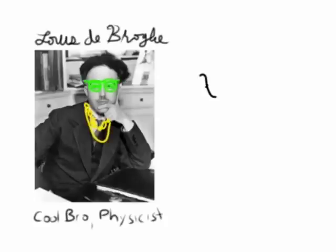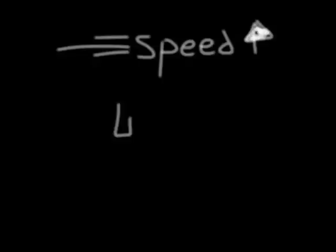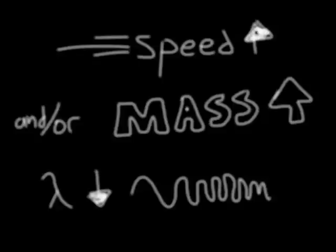A cool bro named de Broglie hypothesized a relationship relating wavelength and momentum, stating the faster and or heavier an object is, the shorter its wavelength.